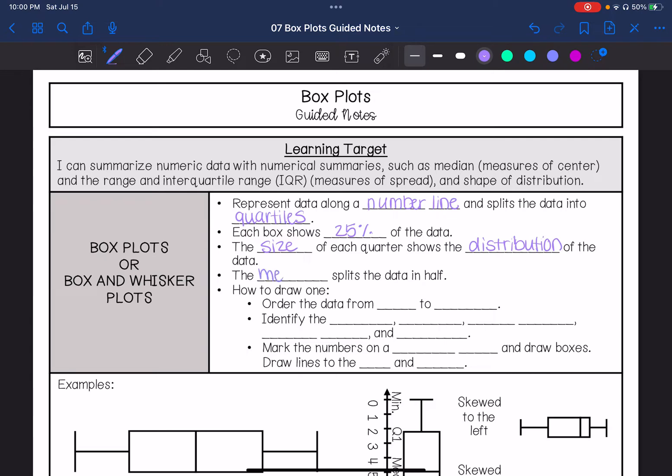The median is what splits the data in half. Median is the middle. So how do I draw a box plot? You're going to order the data from least to greatest. The main numbers you need to identify are the minimum, the maximum, the lower quartile (also known as Q1), the upper quartile (also known as Q3), and the median. You need to know all those things to draw a box plot.